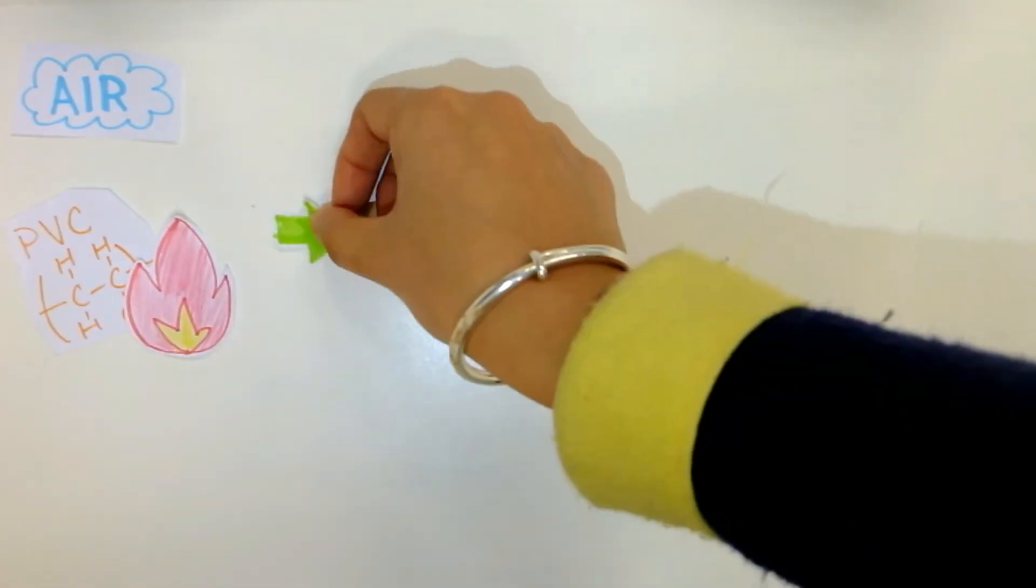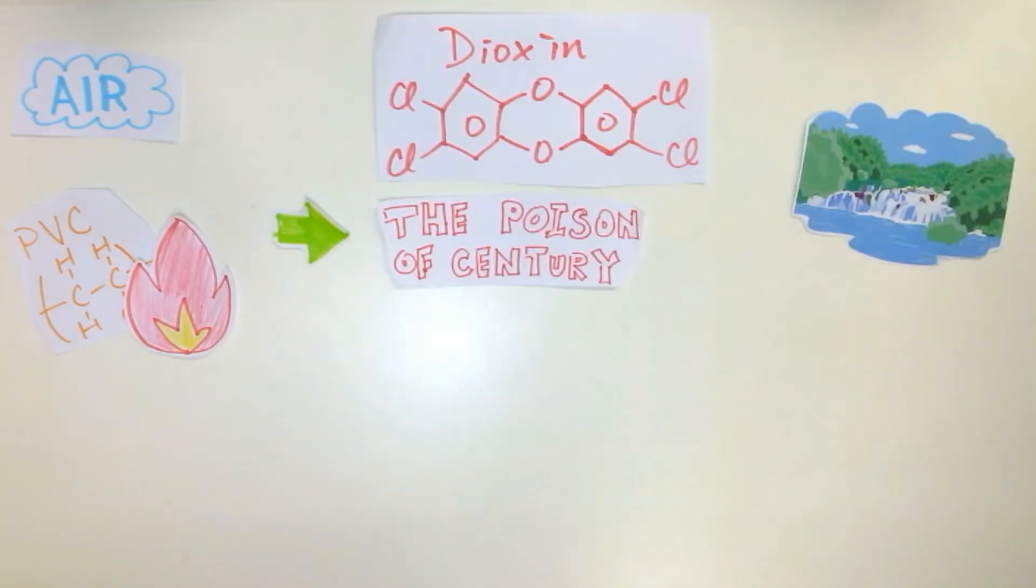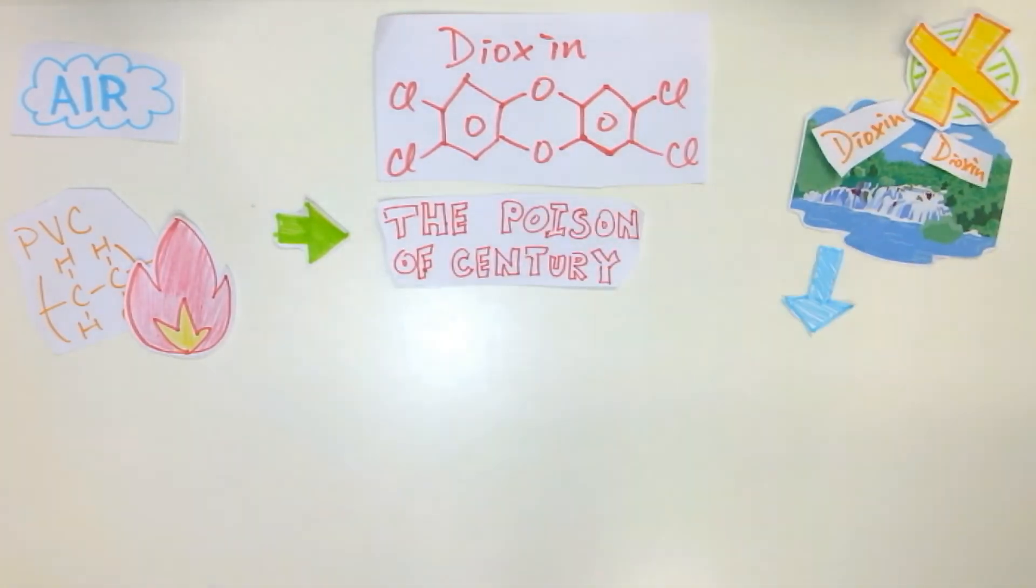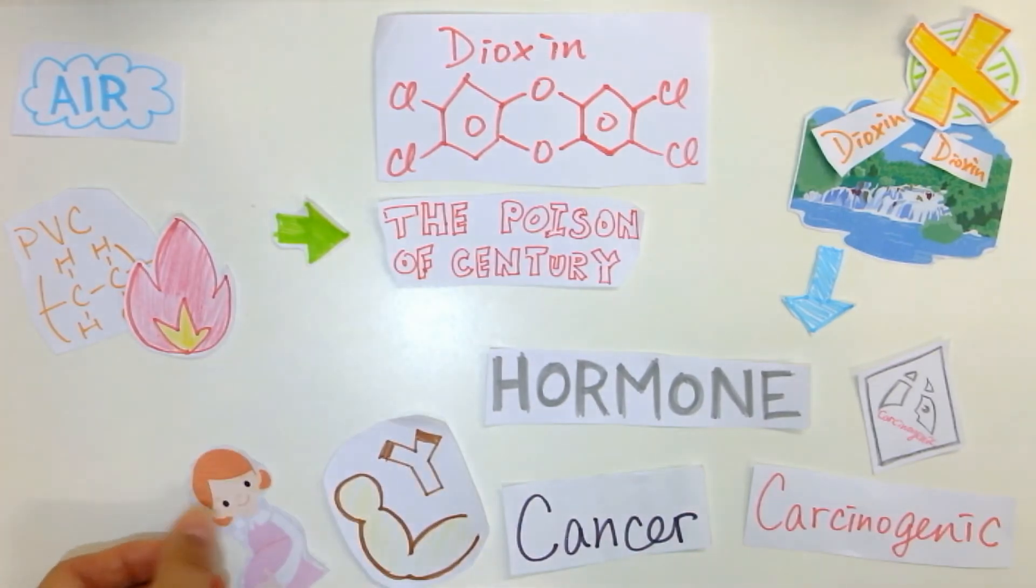First, when PVC is burned, dioxin, a poison of concern, can spread into the environment and cannot break down. It is carcinogenic and affects hormones. Also, it may cause cancer and injure our immune and reproduction systems.